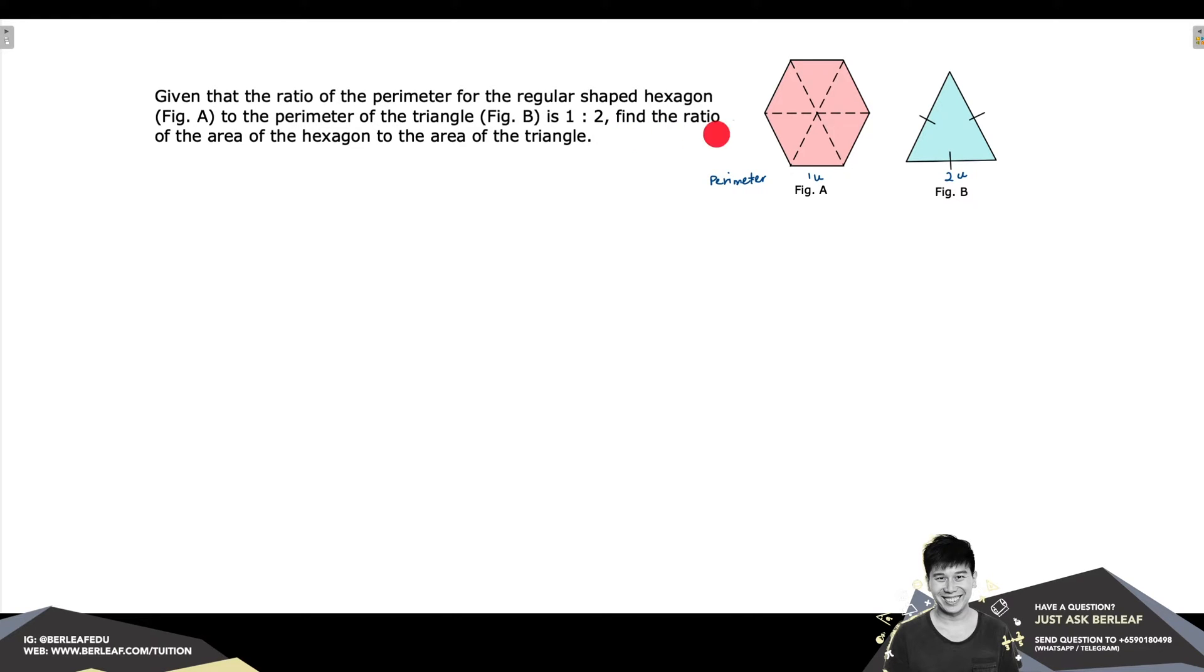Now we are required to find the ratio of the area of hexagon to the area of triangle. Since we can observe triangles in both figure A and B, it will be good for us to first check if any of these triangles is similar to one another. What we are going to look at is one of these equal-sized triangles that is found in the hexagon, which we shall call triangle A, and compare it with triangle from figure B, which we'll call triangle B.